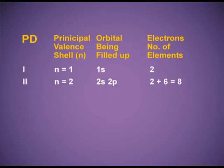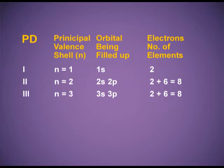The second period: n = 2; the orbitals being filled are 2s and 2p. The s orbital accommodates 2 electrons and the p orbital accommodates 6 electrons, giving a total of 8 electrons and hence 8 elements in the second period. Third period: n = 3, with 3s and 3p orbitals. Similarly, again 8 electrons and 8 elements in the third period.